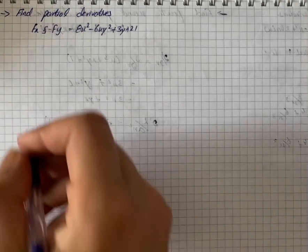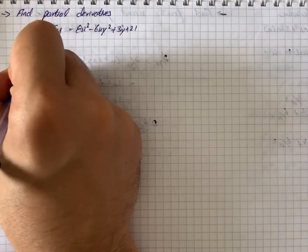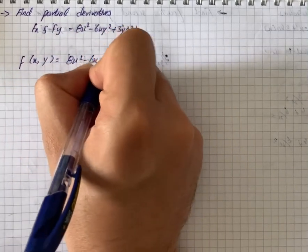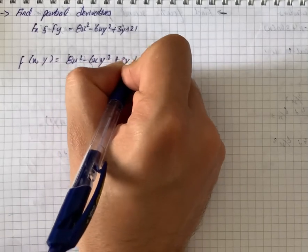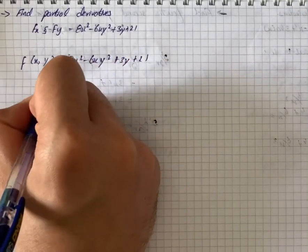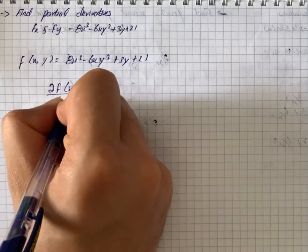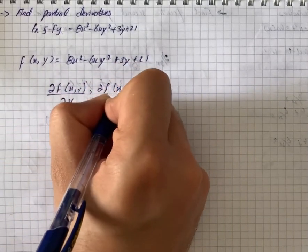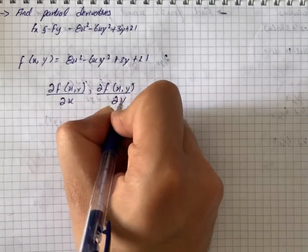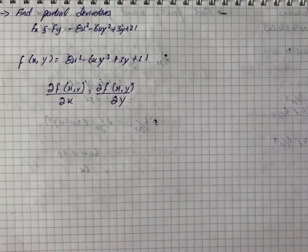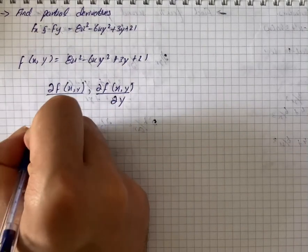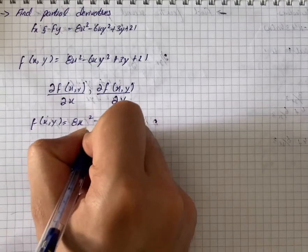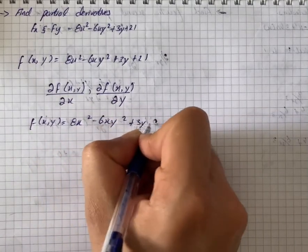Here we have to find the partial derivative. We write f(x, y) = 8x² - 6xy² + 3y + 21. We write ∂f(x,y)/∂x and ∂f(x,y)/∂y. Per the calculation, f(x, y) equals 8x² - 6xy² + 3y + 21.